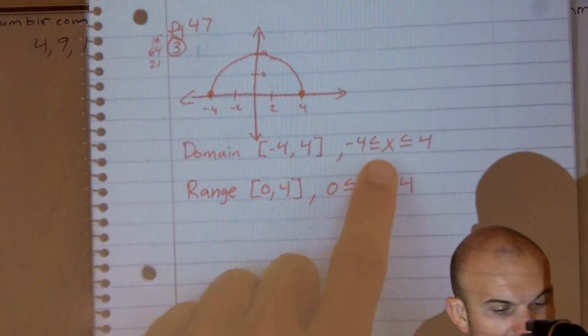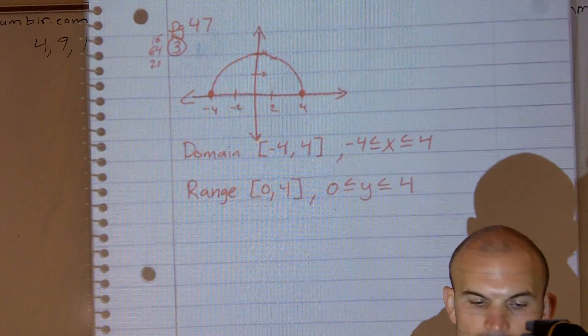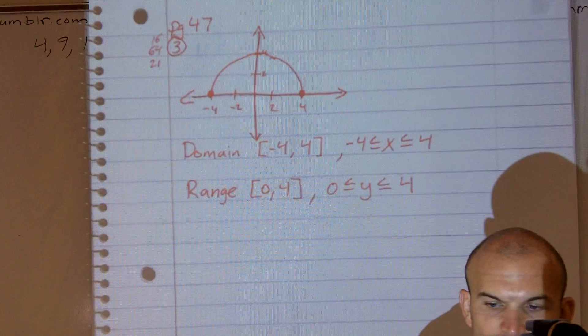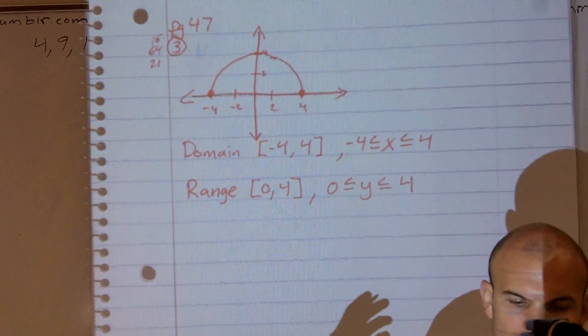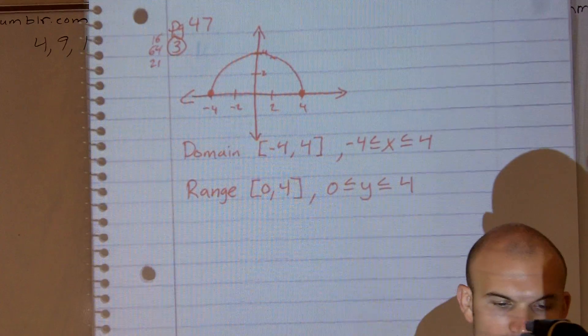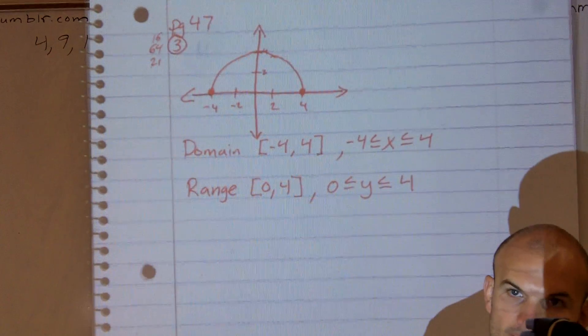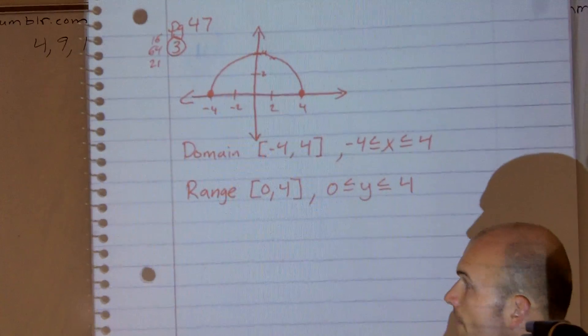Make sure when you're dealing with domain, you're dealing with the x. When you're dealing with range, you're dealing with the y. So when you're looking at domain and range of a graph, just look for what values your graph is defined for each coordinate, your x or your y, depending on what you're finding in domain and range.